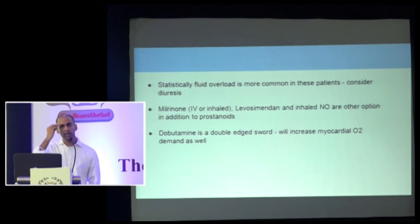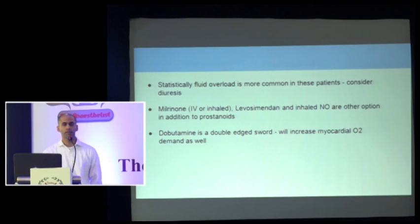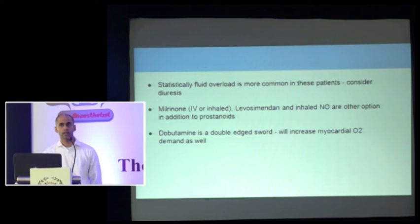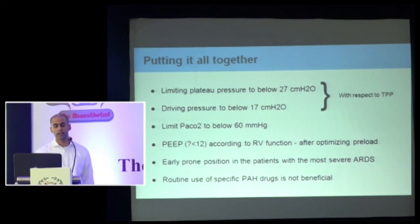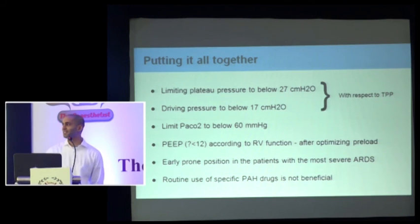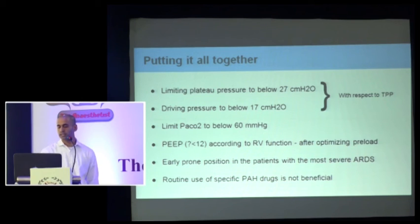A lot of people advocate dobutamine, but it increases both RV oxygen demand and causes tachycardia — both things are bad in a failing RV. Be very cautious. Try not to exceed 5–10 mcg/kg/min, as more than 10 generally causes hypotension due to beta-2 stimulation. Putting it all together: limit plateau pressure to less than 27, driving pressure to less than 17, and limit your PCO2. These are all RV protective strategies. If you take anything home, this is it.